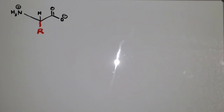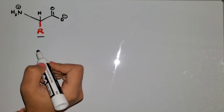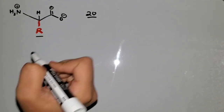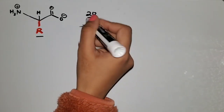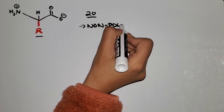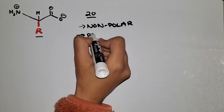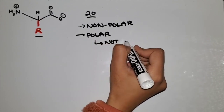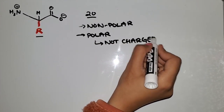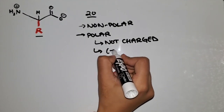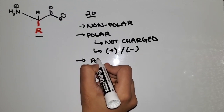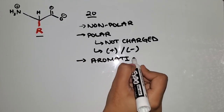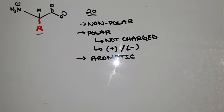I want to bring your attention to what makes every amino acid different — that is the R group. There are 20 different R groups that you have to memorize, and each has different chemical properties. It could be non-polar, it could be polar not charged, or it could be charged positive or negative. And lastly, it could be aromatic. Let's go over what each means.